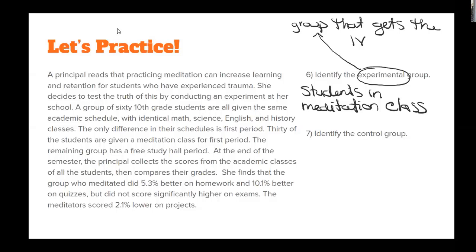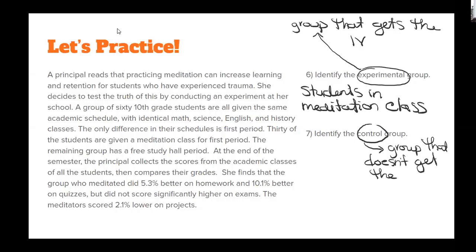The students in the meditation class were the experimental group. Then, I want to identify the control group. What was the control group? This is the comparison group — the group that doesn't get the independent variable. So in this case, if meditation is the independent variable, the group who didn't get it was the group in study hall.